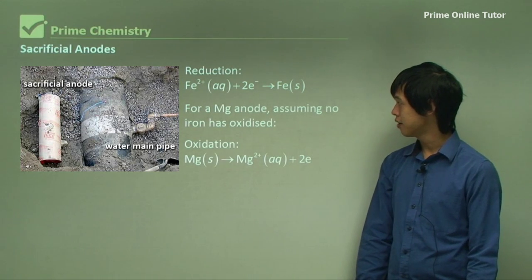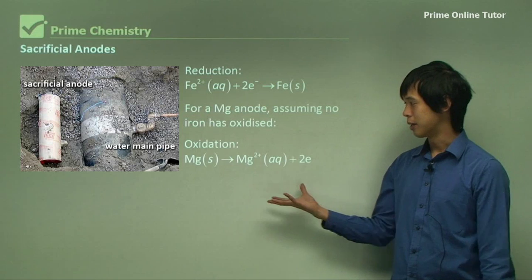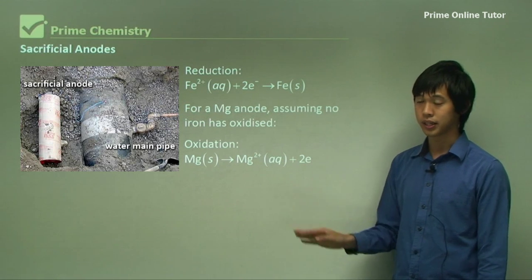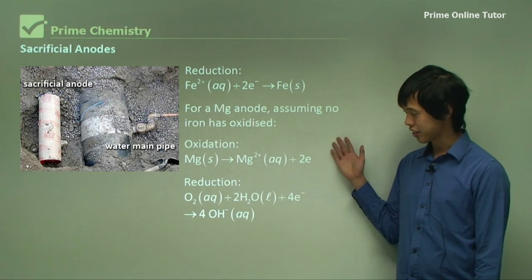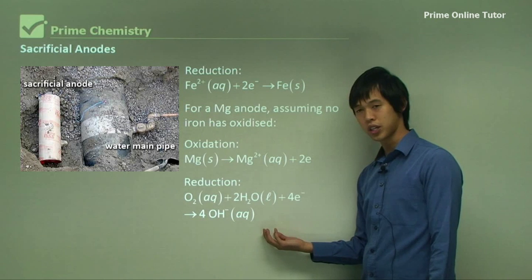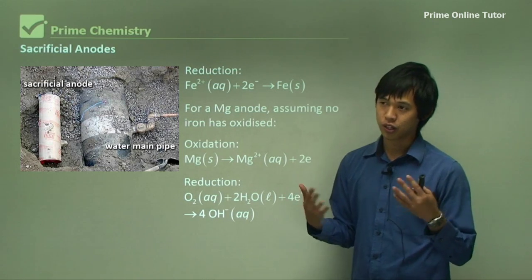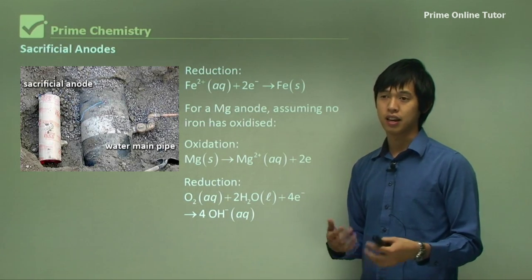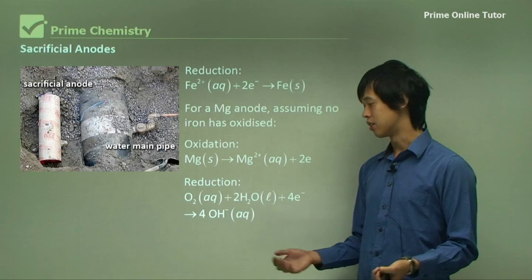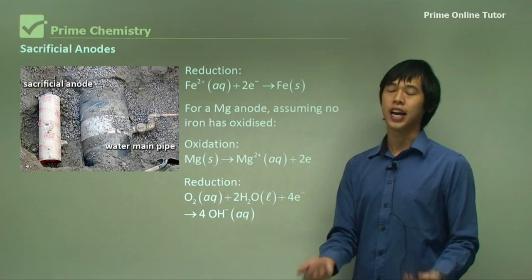For a magnesium anode, assuming no iron has oxidized — so the iron is still intact — the magnesium anode reaction is: Mg(s) → Mg²⁺ + 2e⁻. The reduction is slightly more complicated: O₂(g) + H₂O + 4e⁻ → 4OH⁻. So instead of reducing Fe ions back into solid Fe, because none of that has happened yet, we actually reduce the water and oxygen into OH⁻ instead. Because those electrons have to go somewhere, that is the reaction that occurs.